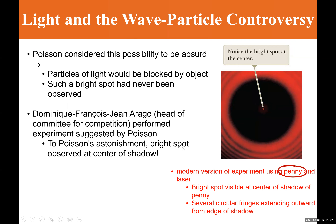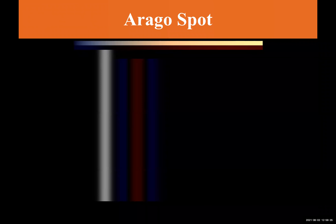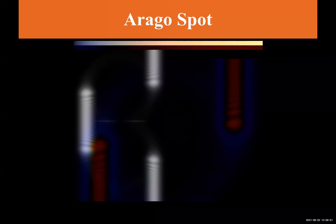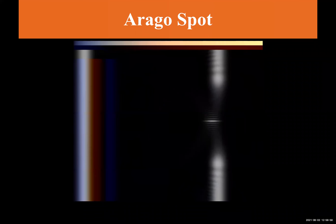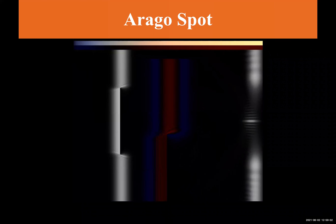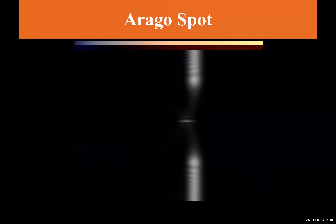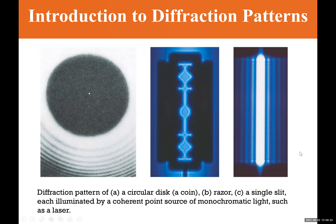A video demonstrates this effect: with a black circular object blocking a light source from the left, you can see a bright spot appear at the very center of the object's shadow. Light diffracts inward around the edge of the object, and because the center is equidistant from all points on the edge, the light interferes constructively there, perfectly demonstrating the wave property of light.